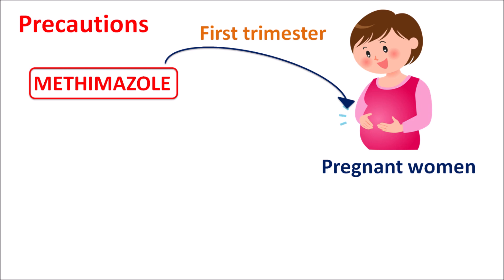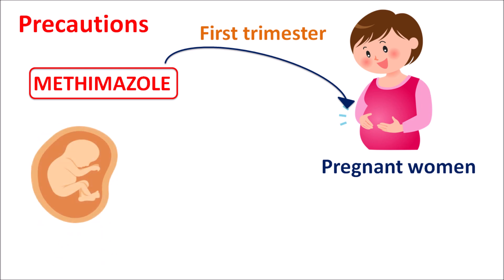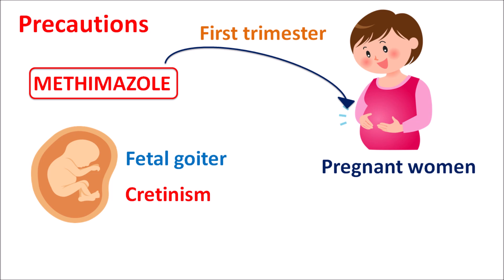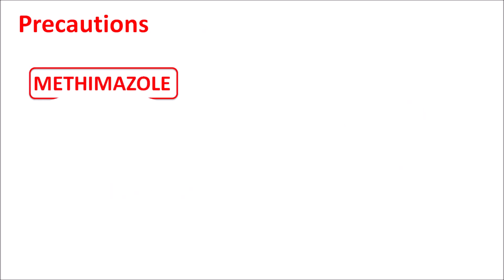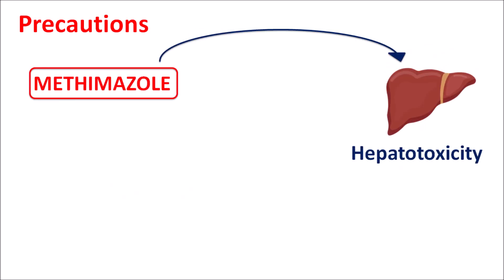This drug can cross the placental barrier, producing effects on the fetus including development of fetal goiter and cretinism. Due to the development of thyroid abnormalities within the fetus, methimazole is less preferred during pregnancy. Another precaution is that methimazole can produce some hepatotoxicity.